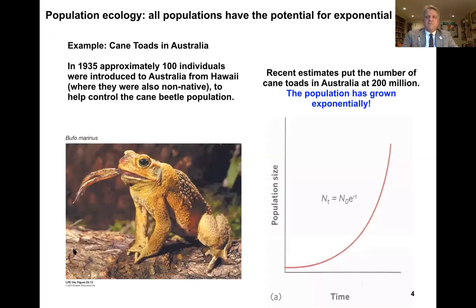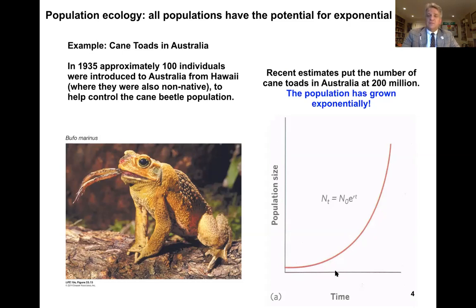All populations have the potential for exponential growth, and a great example are cane toads in Australia. About 100 individuals were introduced in Australia in 1935 to help control a cane beetle population. Since that time, cane toads have exploded with regard to their population size. They've had exponential growth — looking at population size through time, recent estimates put the number of cane toads at 200 million.